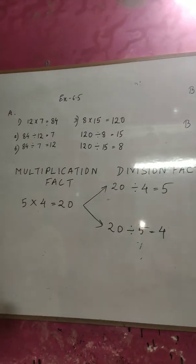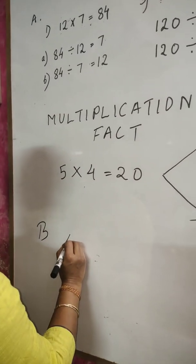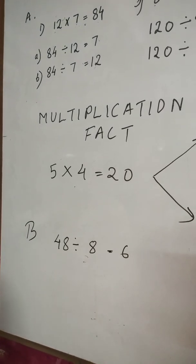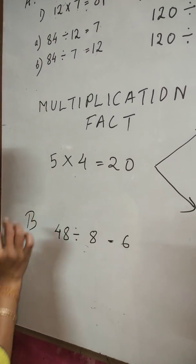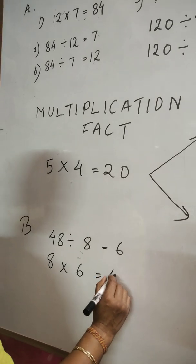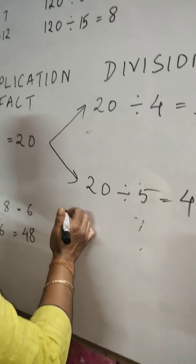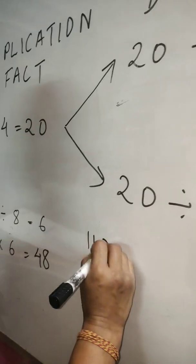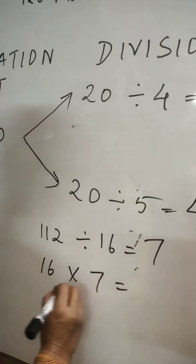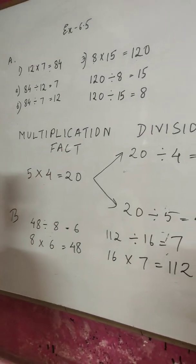Exercise B: write the multiplication fact for the following division facts. For example, 48 divided by 8 equals 6. We make its multiplication fact: 8 multiplied by 6 equals 48. Another example: 112 divided by 7 equals 16, so the multiplication fact is 16 multiplied by 7 equals 112.